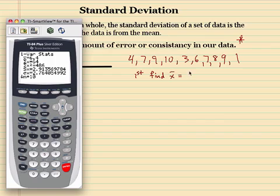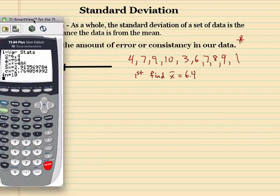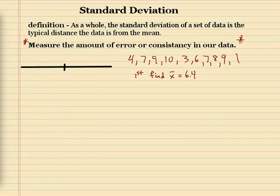And there we have it — it's 6.4. That's our average. So right here I'm going to put this: this is the middle of our data, 6.4.